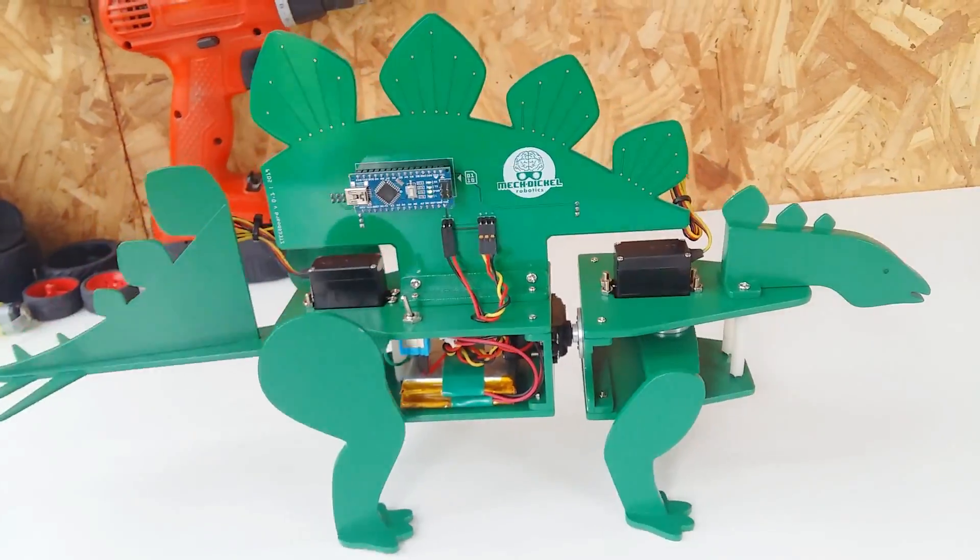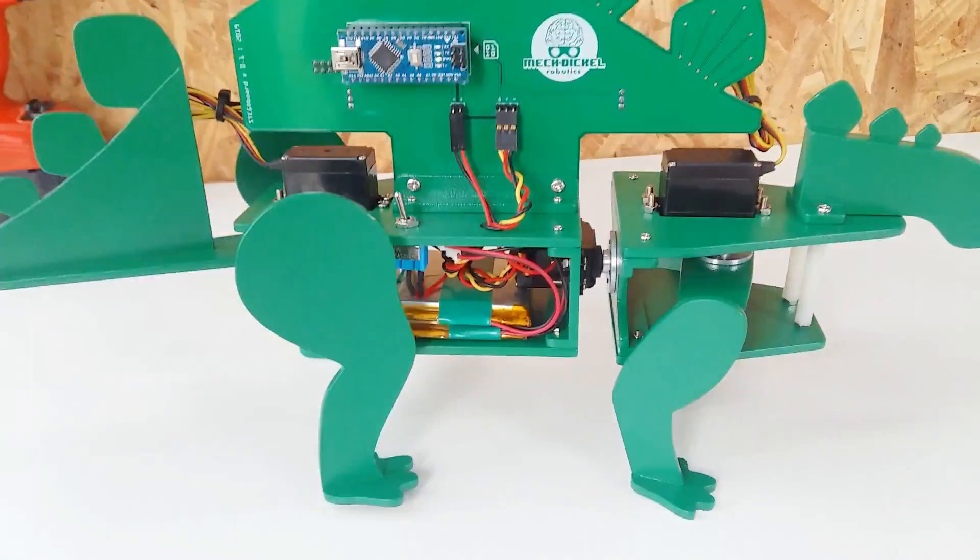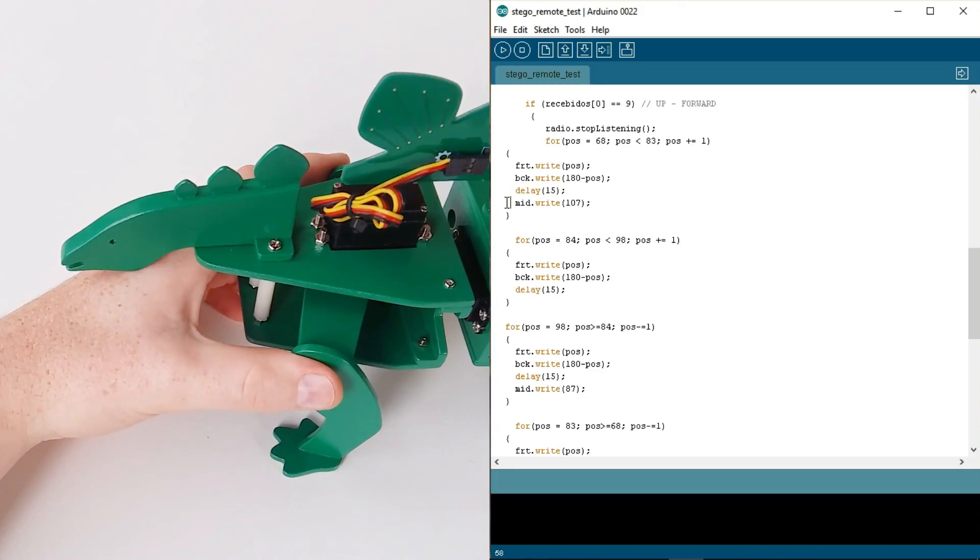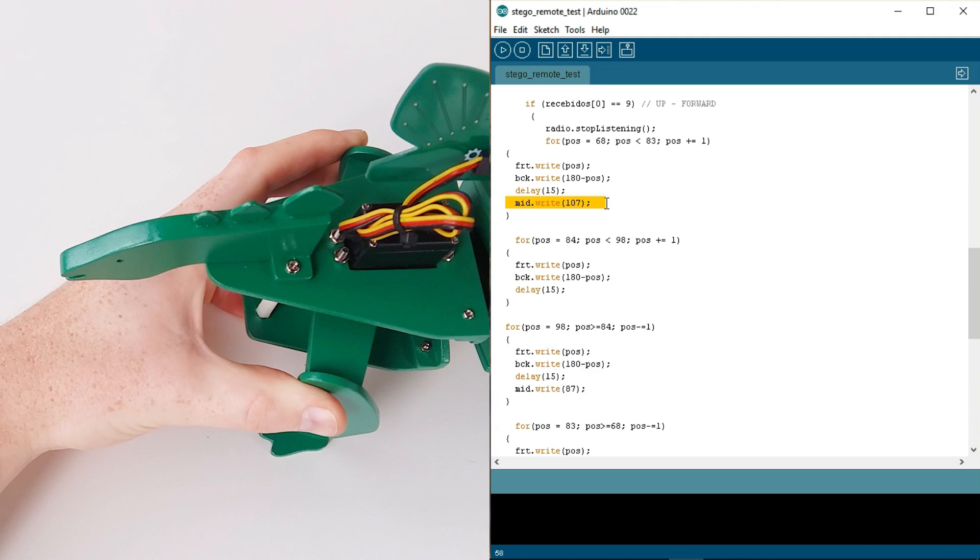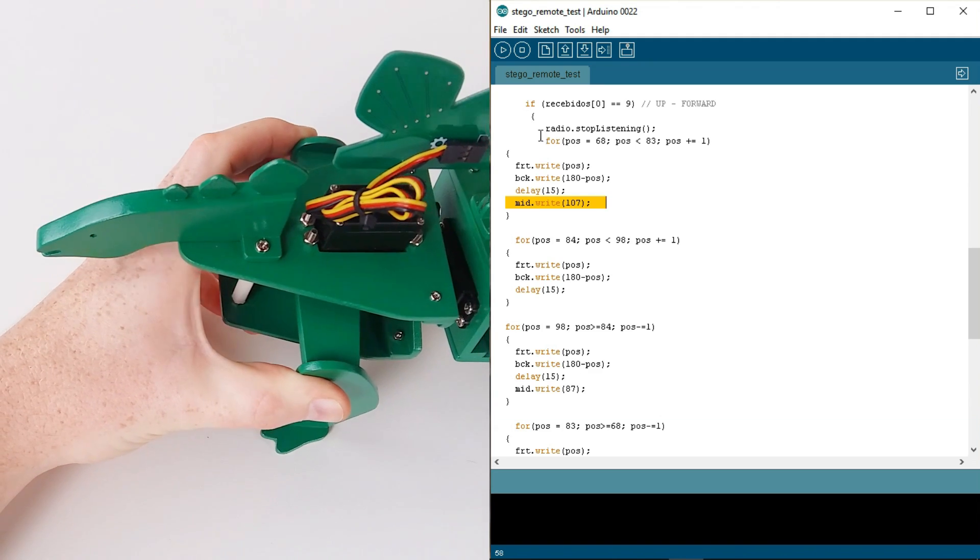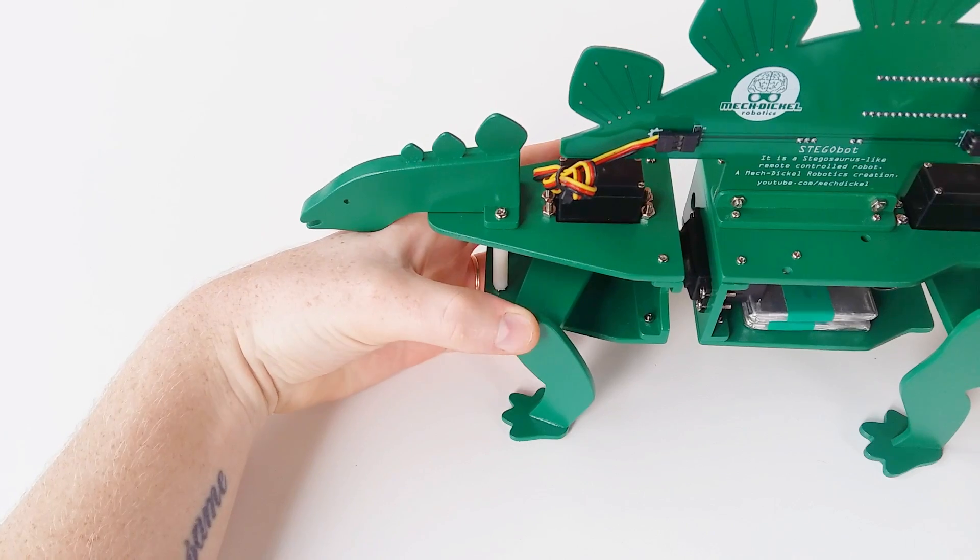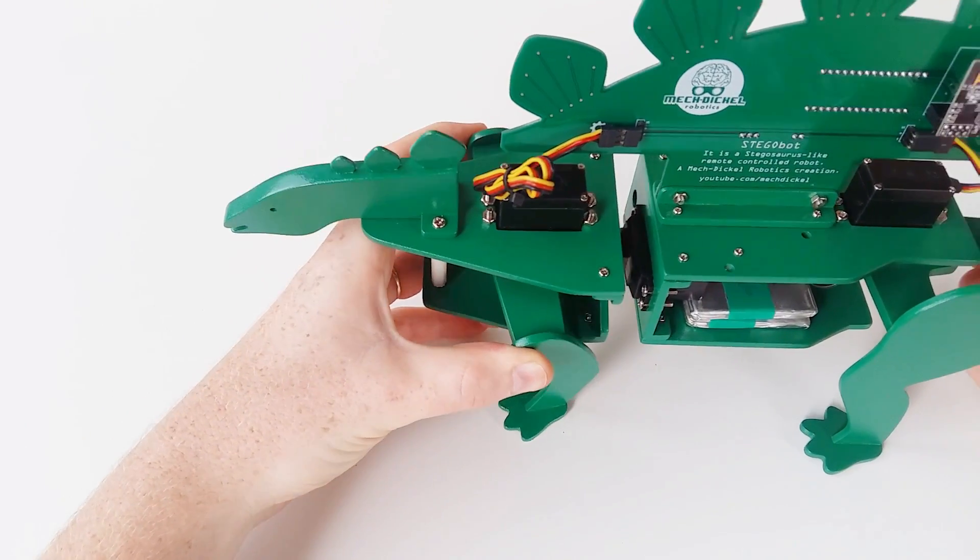The programming of Stegobot is very simple, as it has only three servo motors. Basically, we have to move the middle servo motor to tilt the front of the body and rotate the front leg servo. So, it pulls the robot forward.